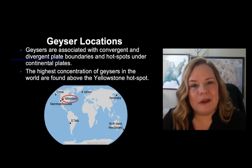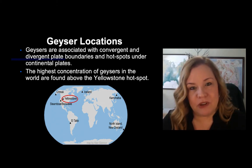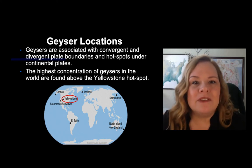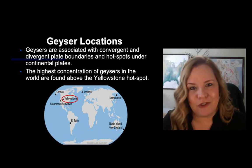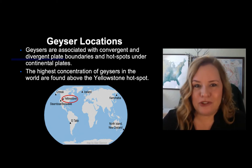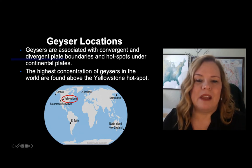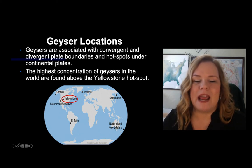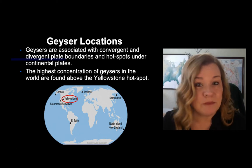Where do we find geyser locations around the world? It's no surprise we find them along major plate boundaries, specifically where heat is involved — divergent and convergent plate boundaries. For example, the ones in Iceland are along a divergent plate boundary, while the ones in New Zealand are from a convergent plate boundary — a subduction zone.